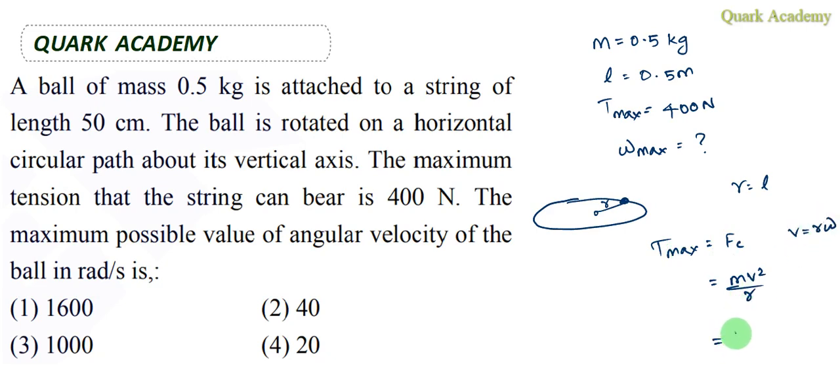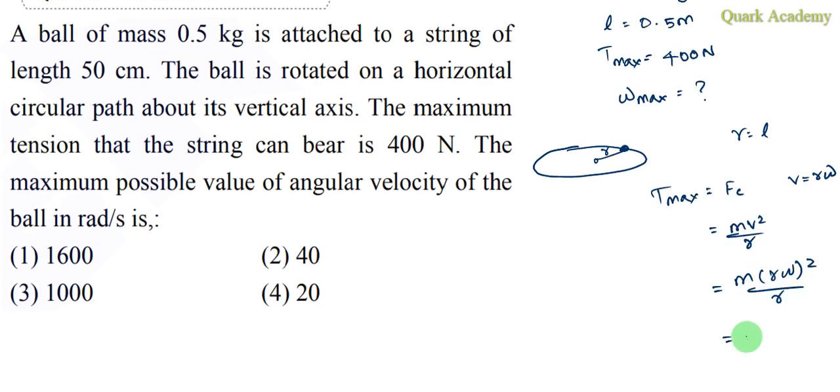This becomes mr omega squared by r, which equals m omega squared r. From this we can write omega squared equals T by mr. Since the tension is maximum, the omega will also be maximum.